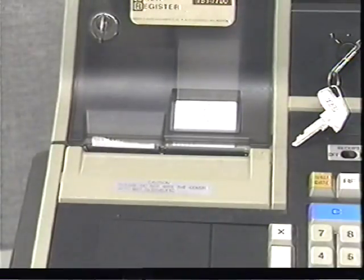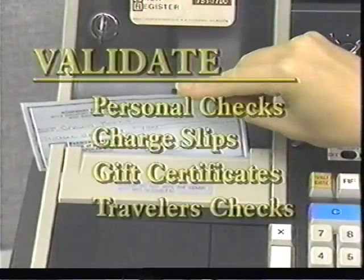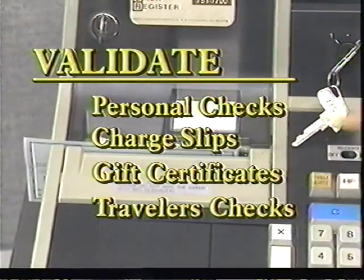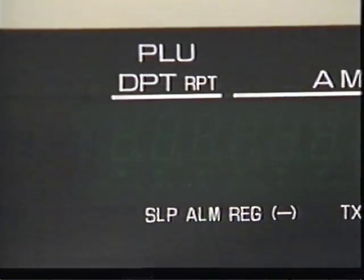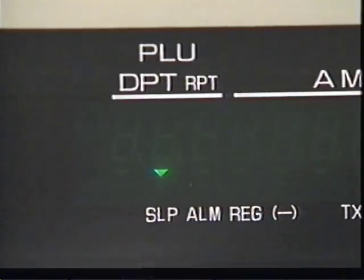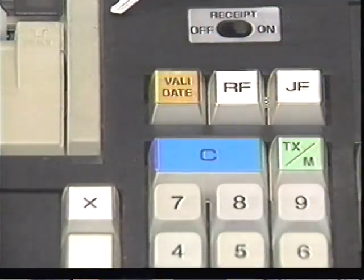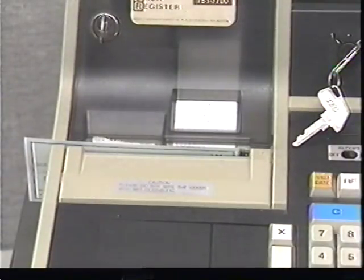To complete the transaction, you must validate the check. Place the check in the printer horizontally, with the printing facing you and all the way to the bottom of the validation slot. When the check is in place, a tiny green arrow appears on the display. Press the validation key just above the numeric keypad. A line of information is printed on the check and the transaction is complete.